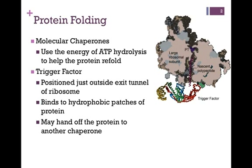First, we'll look at trigger factor. This is the first molecular chaperone that most proteins encounter because it positions itself just outside the exit tunnel of the ribosome. As you can see by examining the figure on the right, trigger factor is highlighted in red, green, blue, and yellow, and it is bound to certain regions of the ribosome, perfectly positioned to bind to the nascent polypeptide, highlighted in magenta.